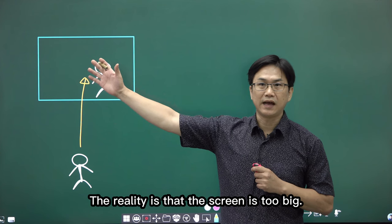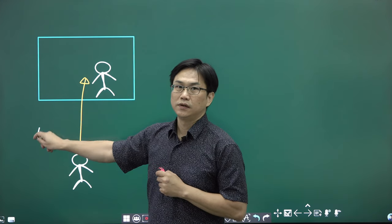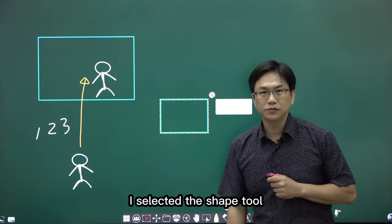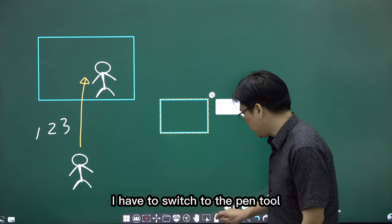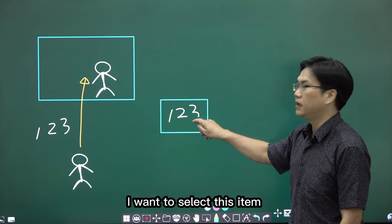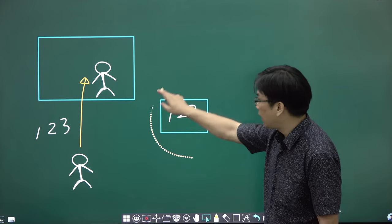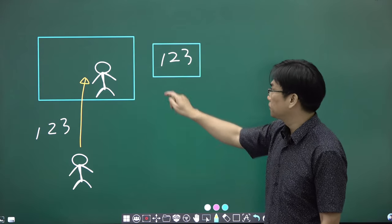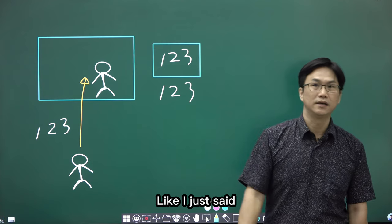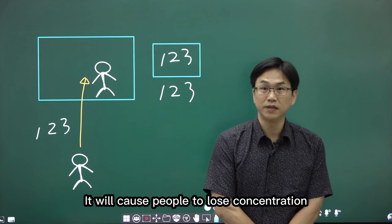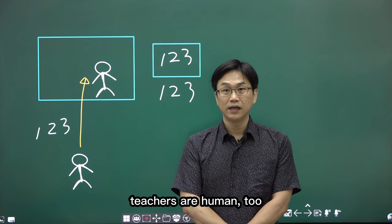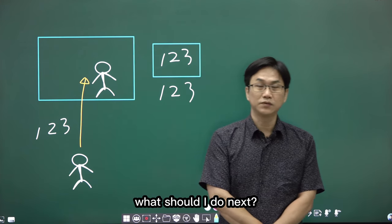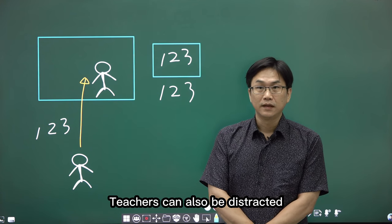What is the reality? The reality is that the screen is too big. I want to write. After I finish writing, I would like to select the shape tool. I selected the shape tool. I want to write, I have to switch to the pen tool. After I switch to the pen tool, I want to select this item, I also need to switch to the selection tool. After replacing, I want to write again. The same, like I just said, every shift of sight will cause people to lose concentration. Teachers are human too. When his attention is diverted, where did I just talk? What should I do next? Teachers can also be distracted.